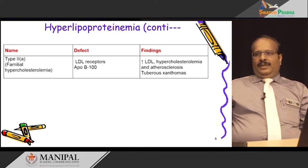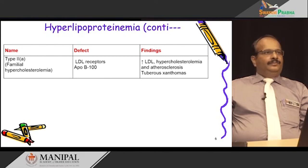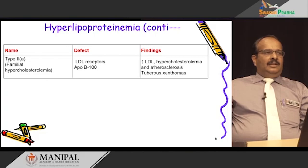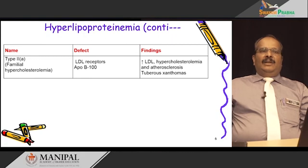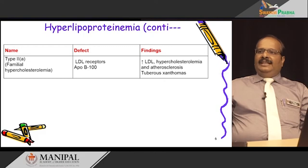The clinical findings include increased LDL, hypercholesterolemia, and atherosclerosis. Tuberous xanthomas, a yellow plaque-like structure, accumulate mainly over the elbows and knees due to accumulation of cholesterol and triacylglycerol.